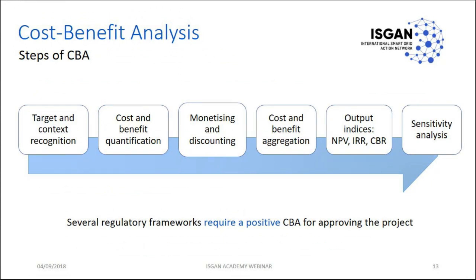The typical steps of CBA are: target and context recognition, cost and benefit identification, monetizing and discounting, cost and benefit aggregation, and finally you obtain NPV, IRR, and the cost-benefit ratio (CBR). You can also perform sensitivity analysis if some of the data in your calculation are uncertain.